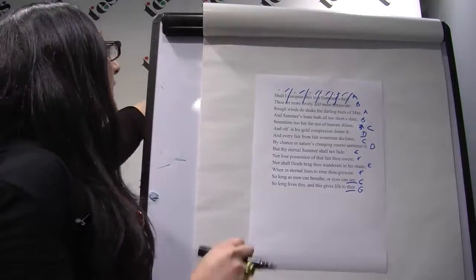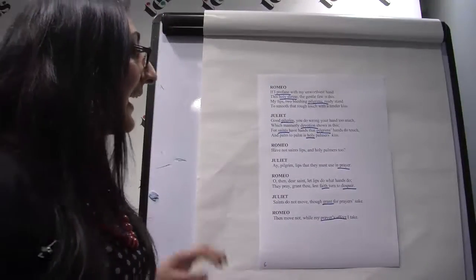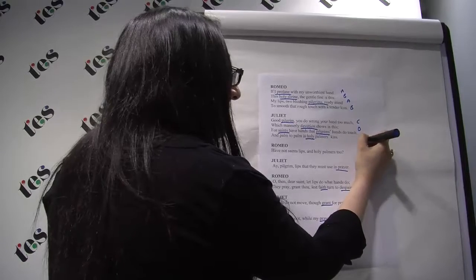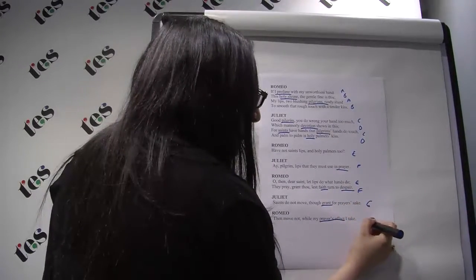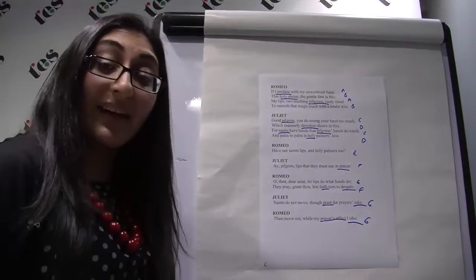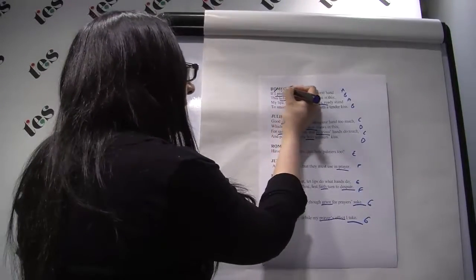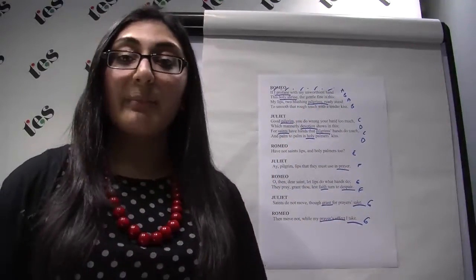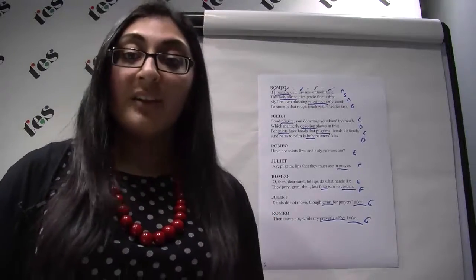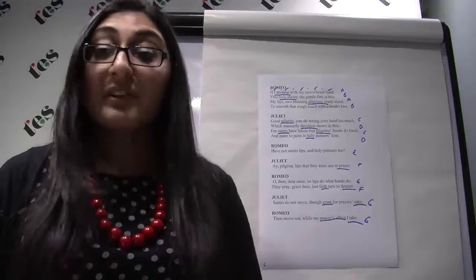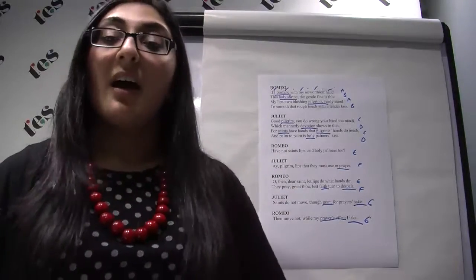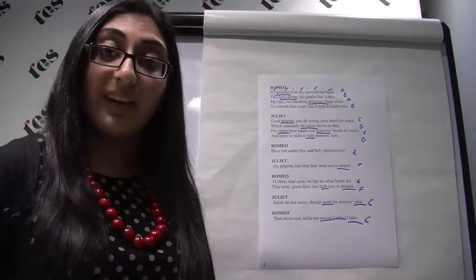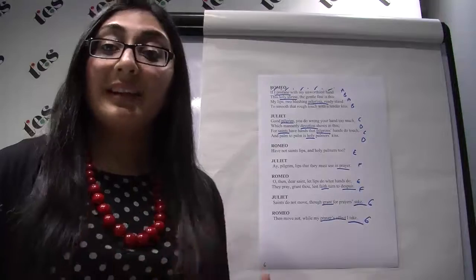Going back to the Romeo and Juliet scene, we notice the exact same thing happening. We've got the same sonnet rhyme scheme — ABAB CDCD EFEF GG — those nice rhyming couplets at the end. And we have a consistent iambic pentameter: 'If I profane with my unworthiest hand.' Shakespeare is using verse to mirror and echo that typical expression of love — the sonnet — only these two lovers are sharing it together. They use their knowledge of language and literary convention very deliberately to evoke that sonnet form.